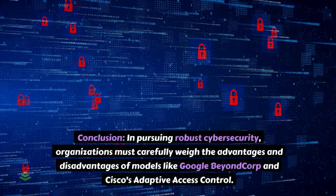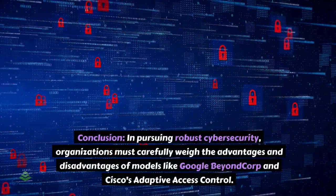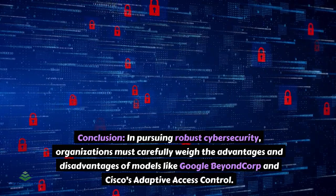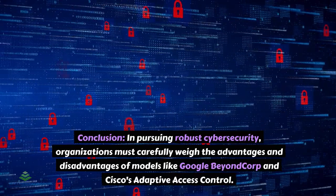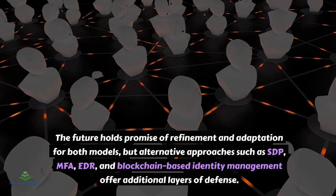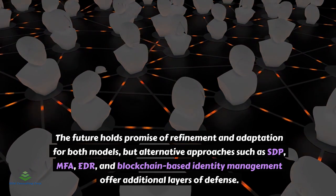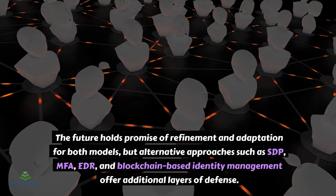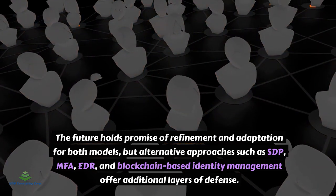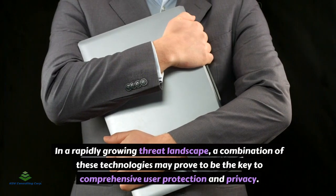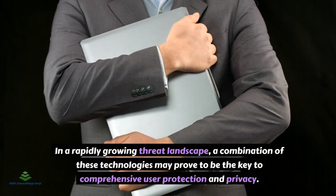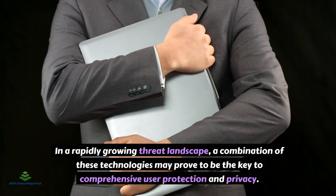In conclusion, in pursuing robust cybersecurity, organizations must carefully weigh the advantages and disadvantages of models like Google BeyondCorp and Cisco's Adaptive Access Control. The future holds promise of refinement and adaptation for both models. But alternative approaches such as SDP, MFA, EDR, and blockchain-based identity management offer additional layers of defense. In a rapidly growing threat landscape, a combination of these technologies may prove to be the key to comprehensive user protection and privacy.